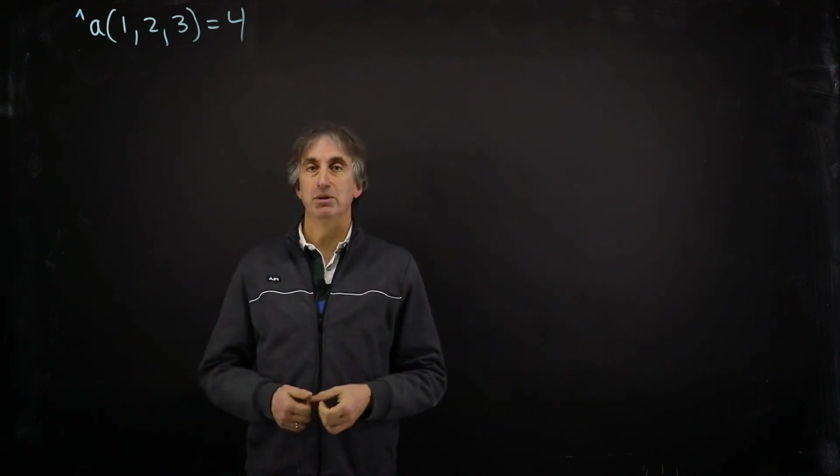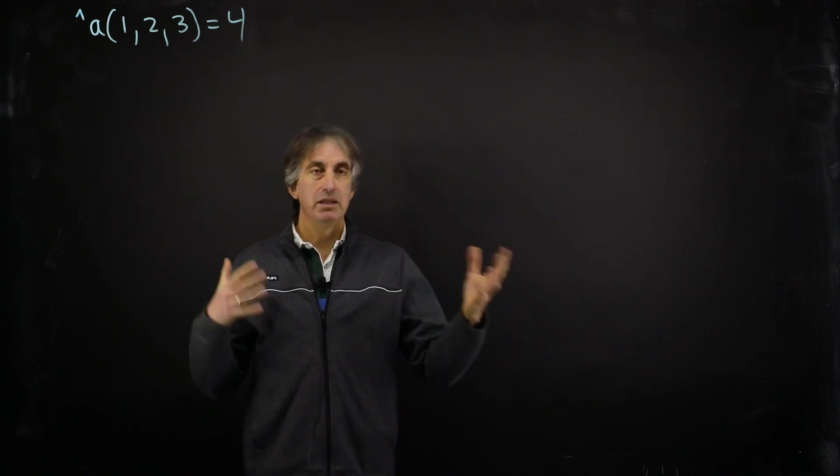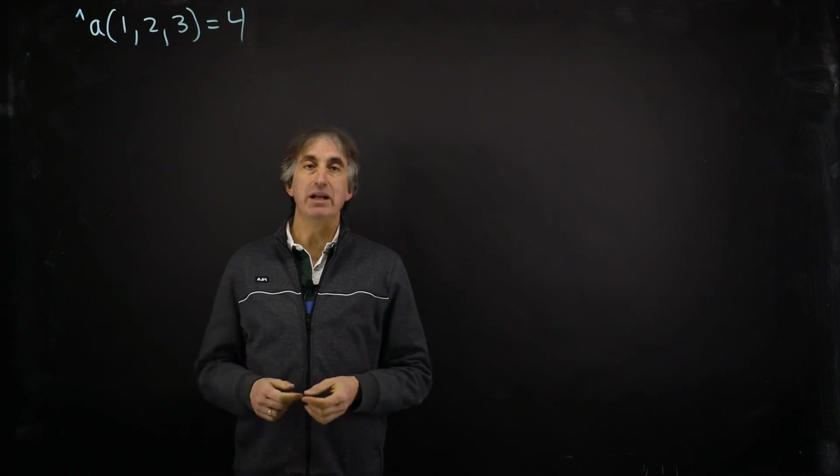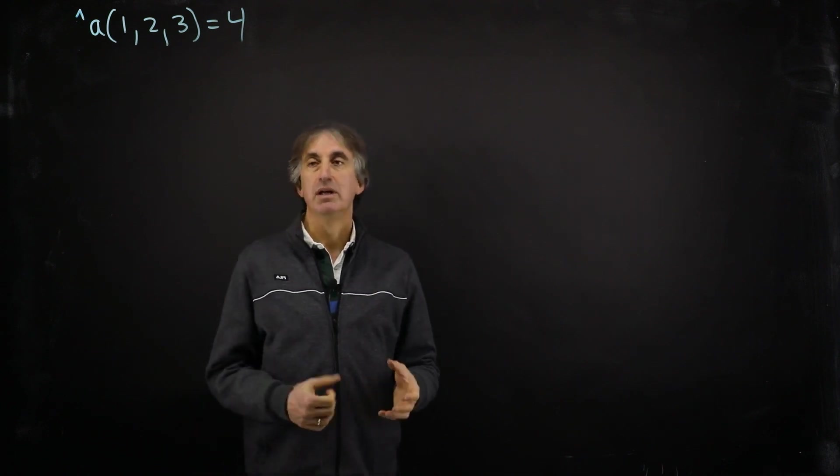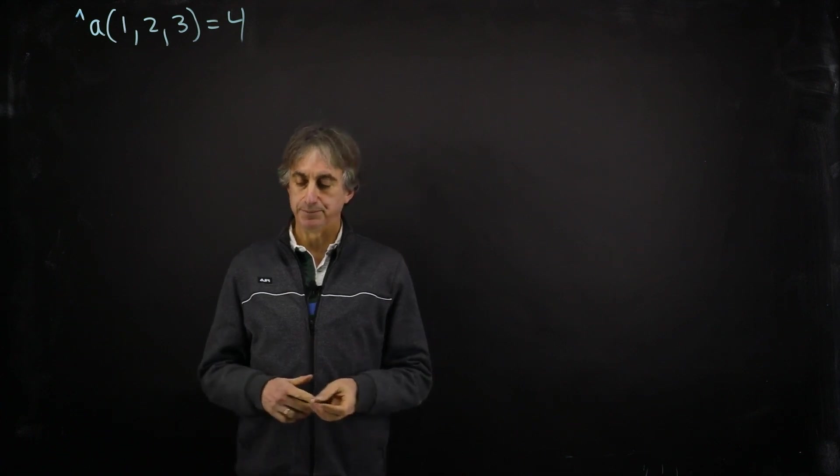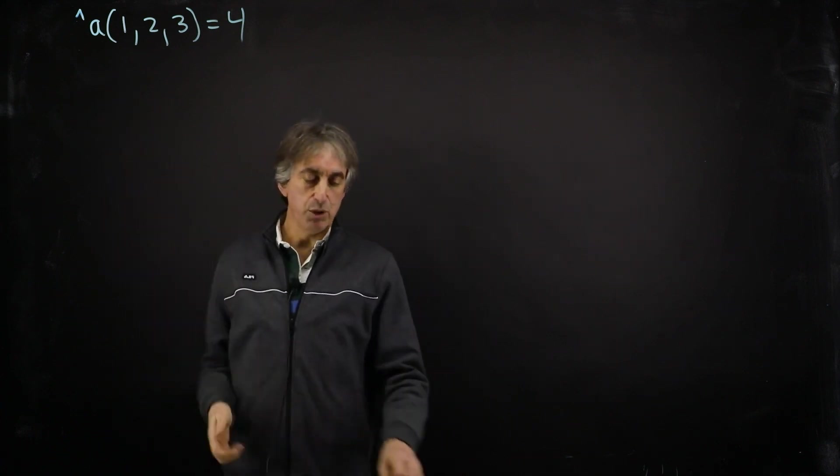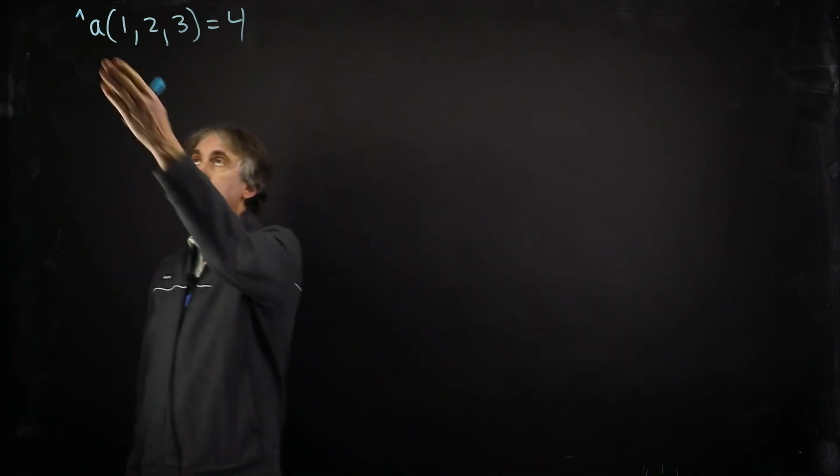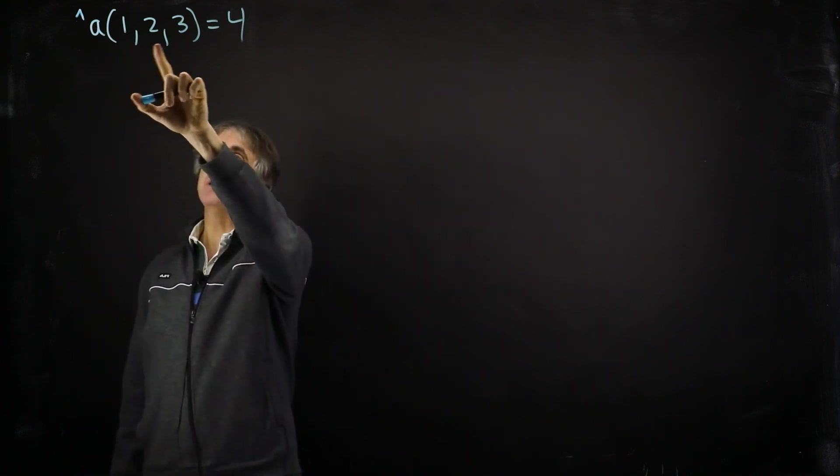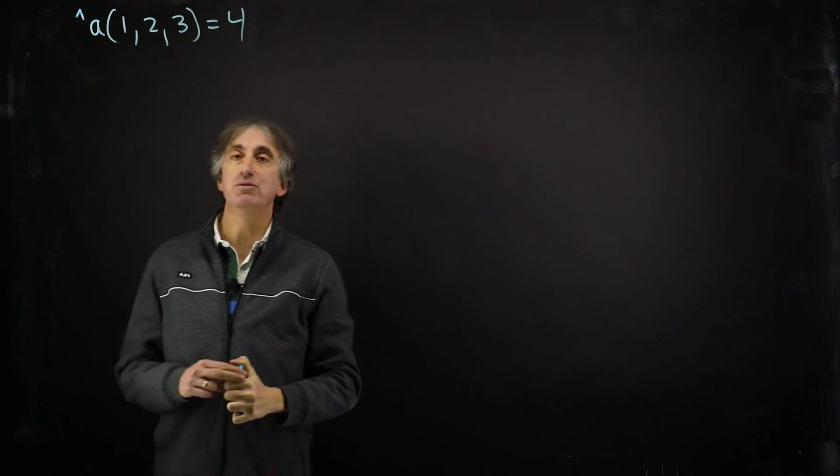The data is globally available. So in my little demonstration here today, I'm going to be using sort of random data to illustrate some points. This data is not related to any real application data. So here's the global A. Global names must start with a caret, and this global has three subscripts, and it's storing the value 4.